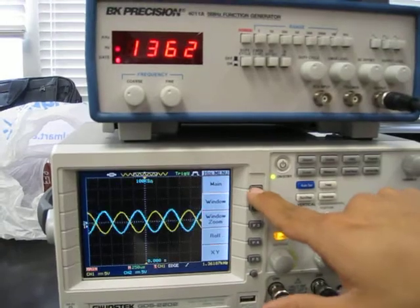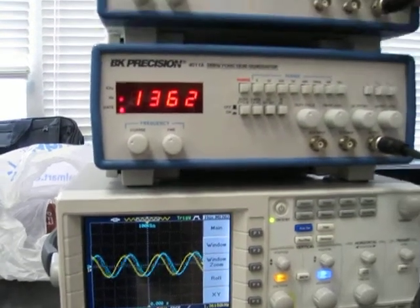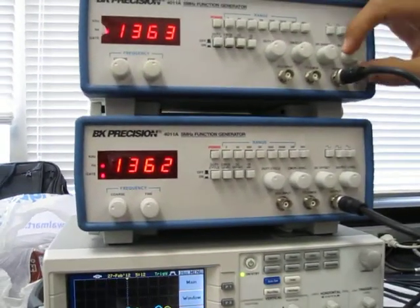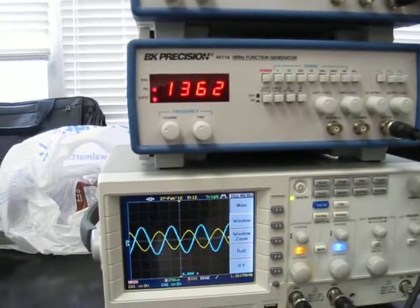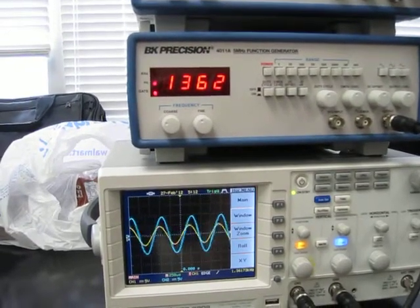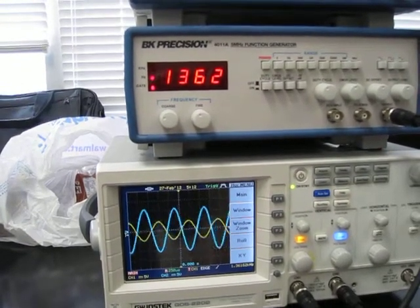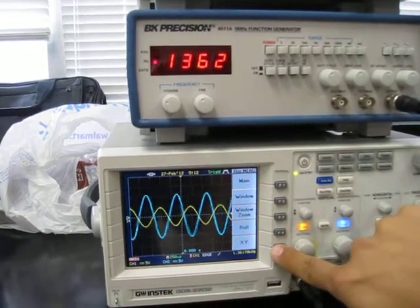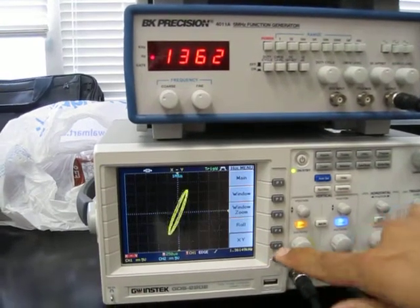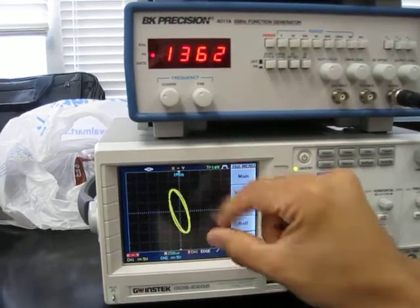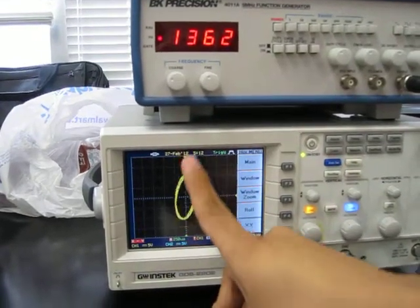Another thing I can change is the amplitude using the output here. I'm changing channel 2's amplitude to make it bigger right now.